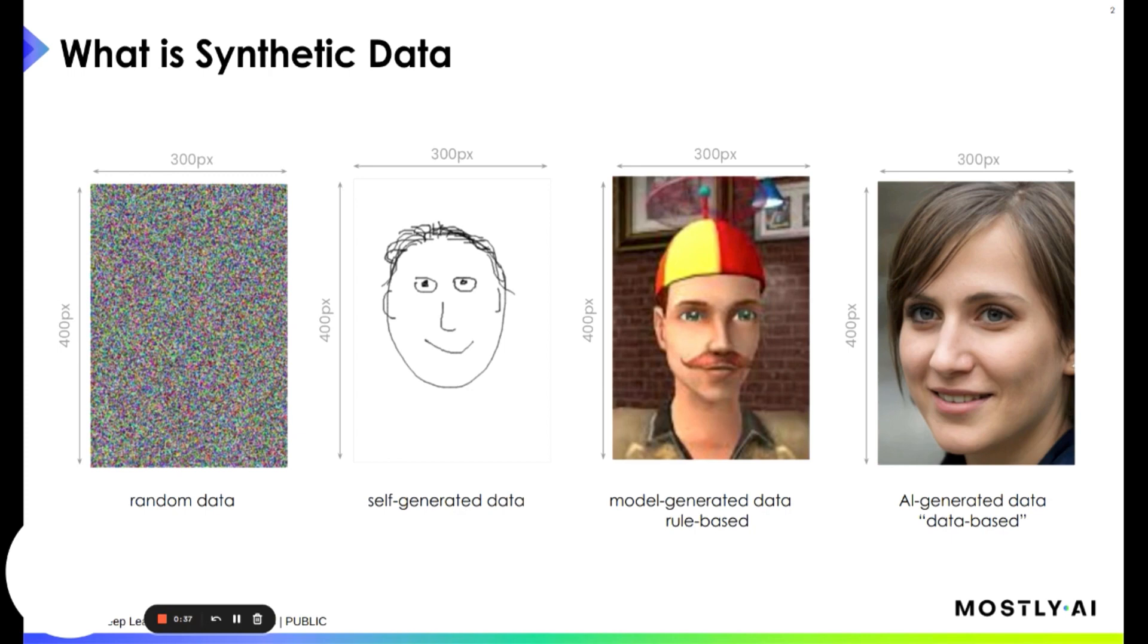Summarizing what synthetic data is for me, especially for the rest of this talk: synthetic data is when you have an AI system that trains on original data to extract correlations, patterns, and distributions which are then, in the inference phase, used to create a synthetic photorealistic population.